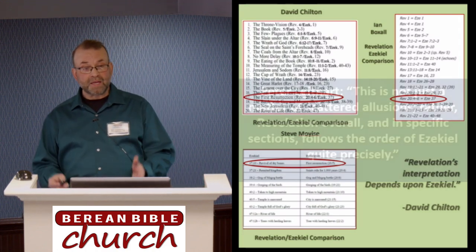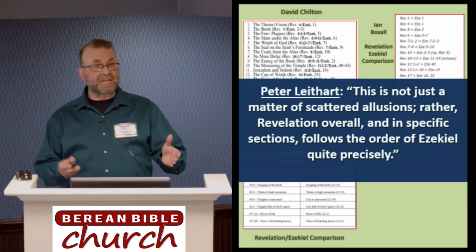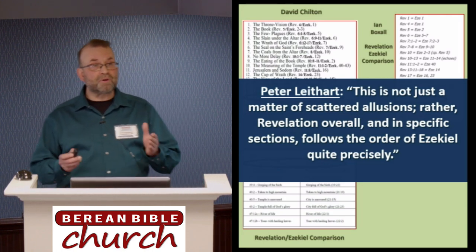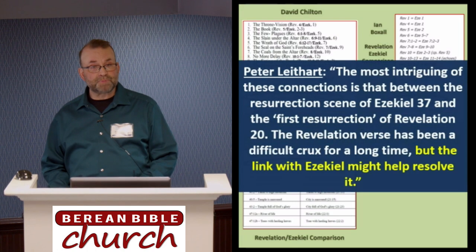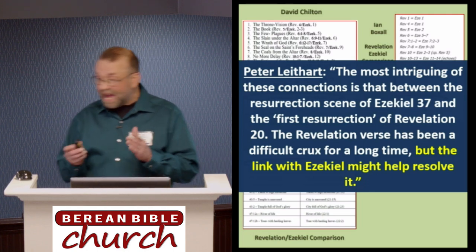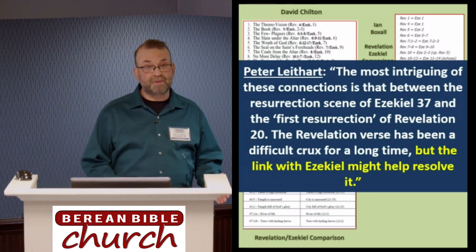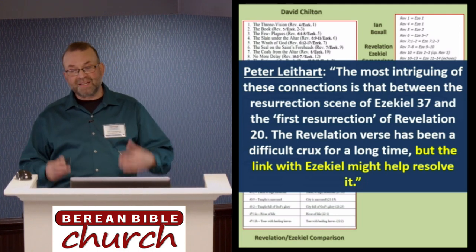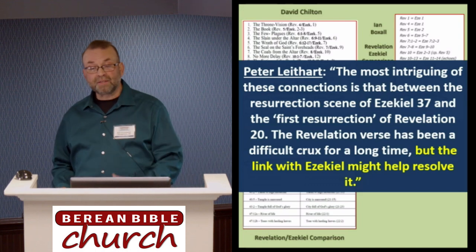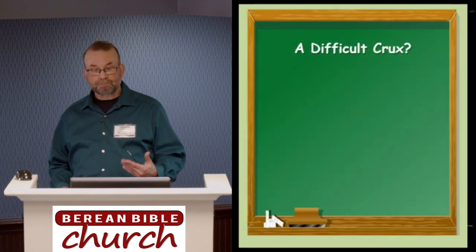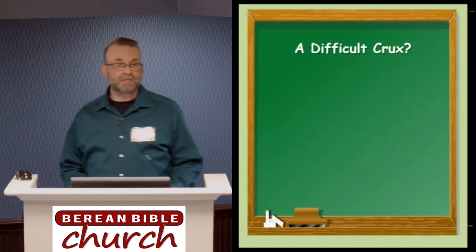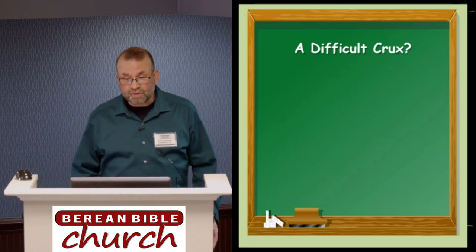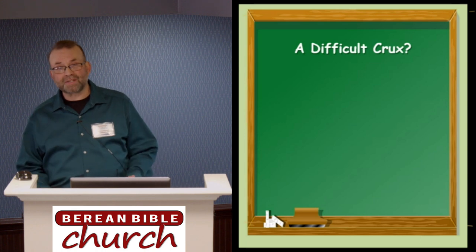Peter Leithart puts it together. He writes: 'This is not just a matter of scattered allusions. Rather, Revelation overall, and in specific sections, follows the order of Ezekiel precisely.' With this in mind, he observes: 'The most intriguing of these connections is that between the resurrection scene of Ezekiel 37 and the first resurrection of Revelation 20. The Revelation verse has been a difficult crux for a long time, but the link with Ezekiel might help resolve it.' Leithart calls the first resurrection of Revelation 20 a difficult crux, but it would seem these very scholars have already solved that difficult crux without even realizing it.